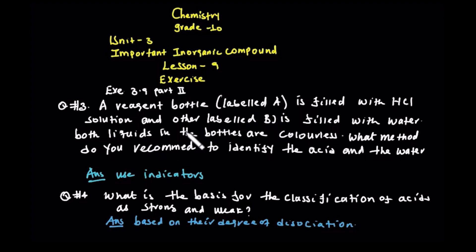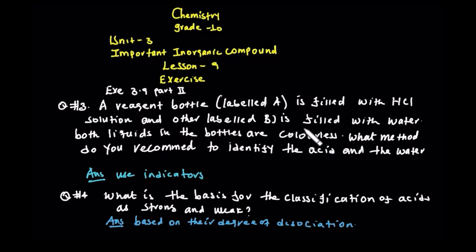Both liquids in the bottle are colorless. Liquid A — hydrochloric acid — is not colored, and liquid B — water — is not colored either. So, what method do you recommend? It is a measurement to identify the acid and the water. What method do you recommend to identify acid and water?